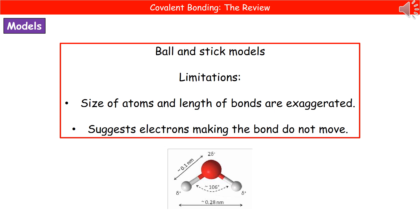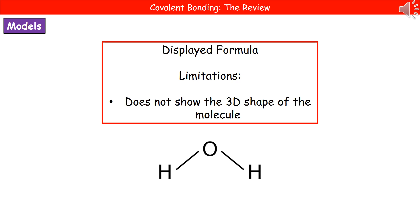There are a few models we can use to represent bonding within molecules. The first is the ball and stick model — the kind of thing you may have used with molymod kits in class. Its limitations are that the size of atoms and bond lengths are exaggerated, and it suggests electrons don't move since rigid plastic holds them in place. However, it does show the general structure of the molecule. The second model is the displayed formula, where you use the element symbol and draw a line to represent the bond. Its downside is that it doesn't show the three-dimensional shape of the molecule.